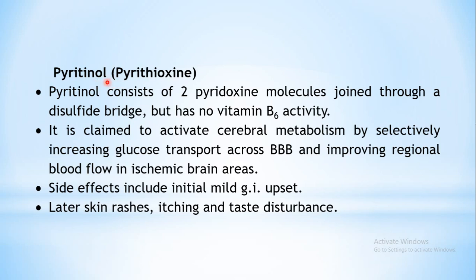The next drug is pyritinol, also known as pyrithioxin. This drug consists of two molecules of pyridoxin. Pyridoxin, as you are already aware, is vitamin B6. In this compound pyritinol, there are two molecules of vitamin B6 joined together through a disulfide bridge. Though there are two molecules of pyridoxin present in this molecule, still it does not have any vitamin B6 activity, because they are joined together through a disulfide bond.